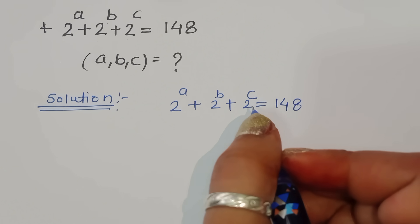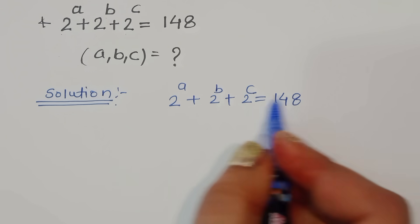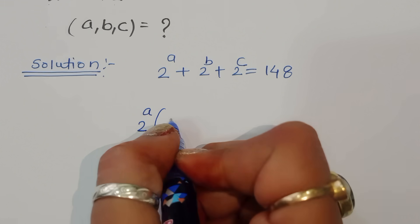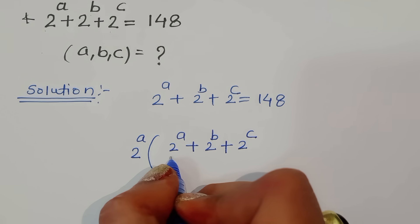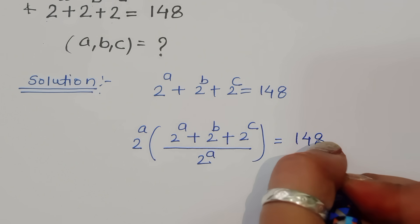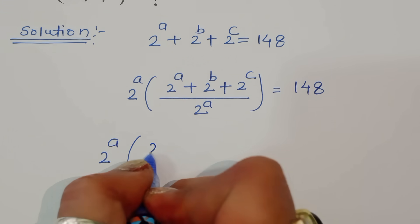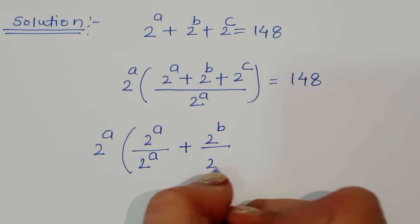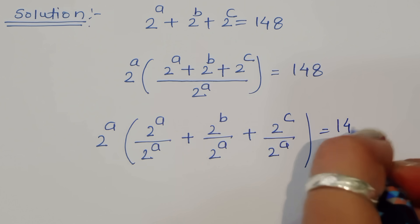We can do one thing here — multiply and divide by 2 power a. So if we multiply and divide by 2 power a, we can separate the terms: 2 power a times (2 power a divided by 2 power a, plus 2 power b divided by 2 power a, plus 2 power c divided by 2 power a) is equal to 148.